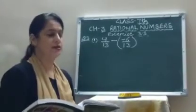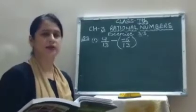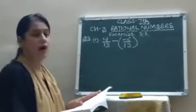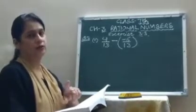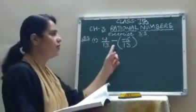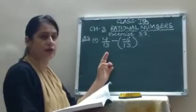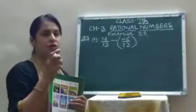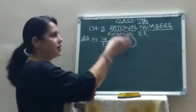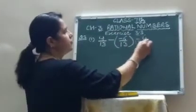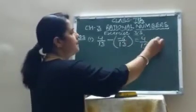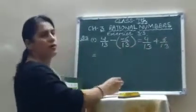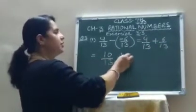Now question number 3 is subtraction. Subtract minus 6 upon 13 from 4 upon 13. Children, write carefully: the number from which you subtract is written first. So write 4 upon 13 first, then put the minus sign, then write minus 6 upon 13 in brackets. Remember, whichever rational number 'from' refers to, write that first. Opening the bracket: 4 upon 13 minus minus becomes plus 6 upon 13. Since denominators are the same, 4 plus 6 is 10, so the answer is 10 upon 13.